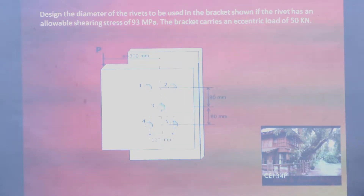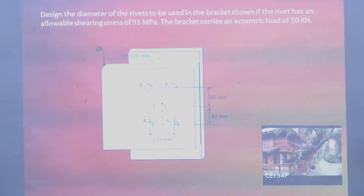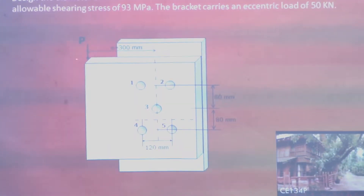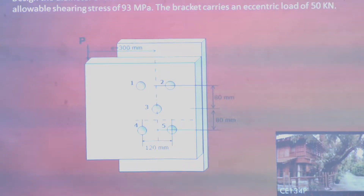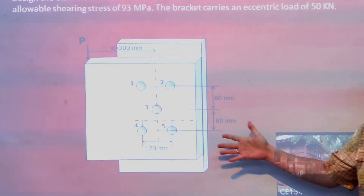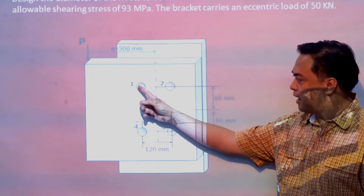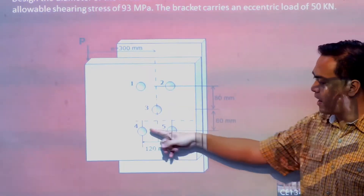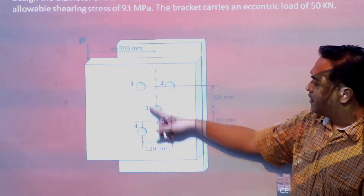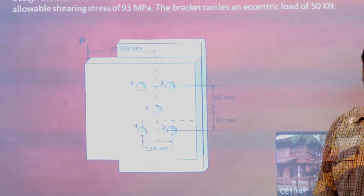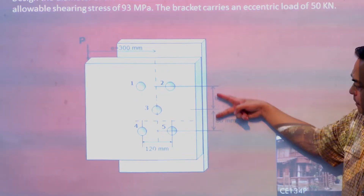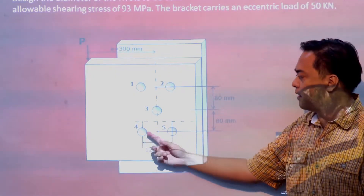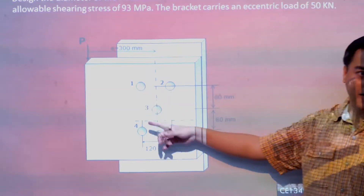This bracket carries an example load of 50 kilonewtons applied at a distance of 300 mm from the center point. As you can see, it is connected using 5 pieces of rivets, and they are in equal spacing and placed symmetrically as well.